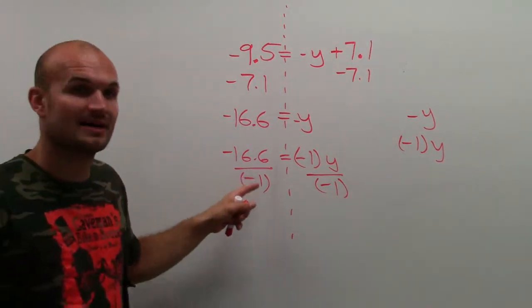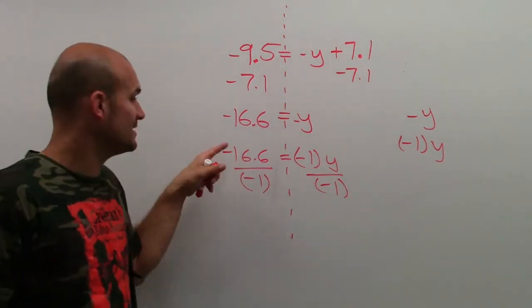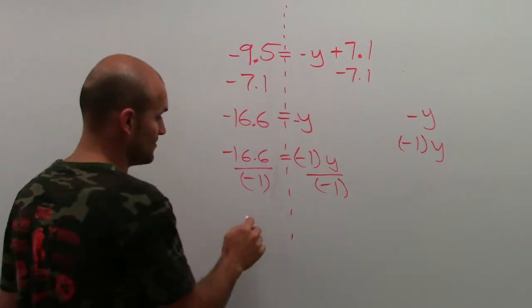Okay? Well, any number divided by itself is just going to be that number, but then I have a negative divided by negative, which will make it a positive.